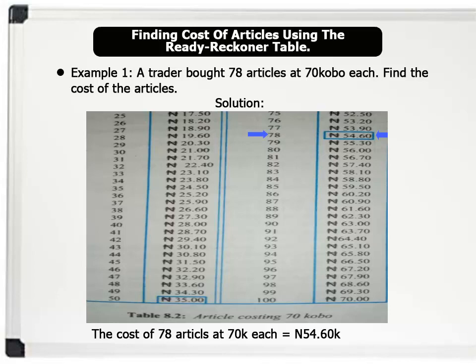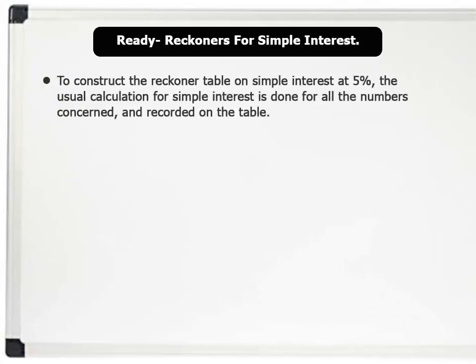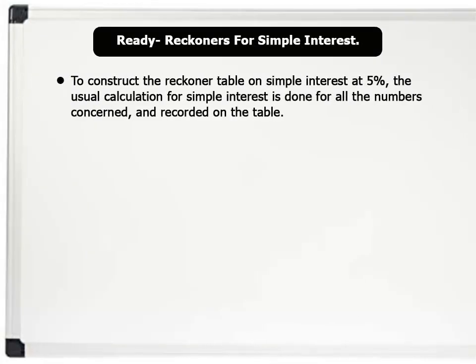That's very good. Now let us find simple interest using the Ready Reckoner table. To construct the Reckoner table on simple interest at 5%,